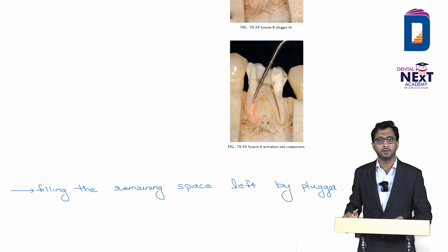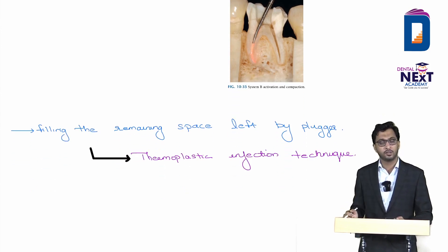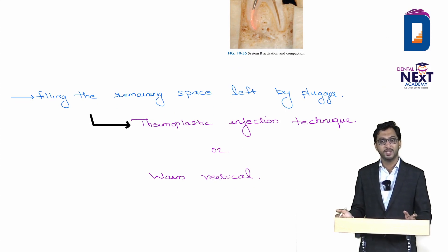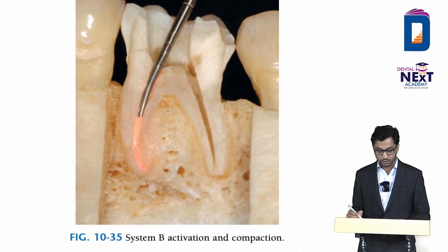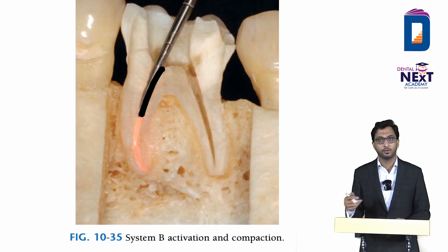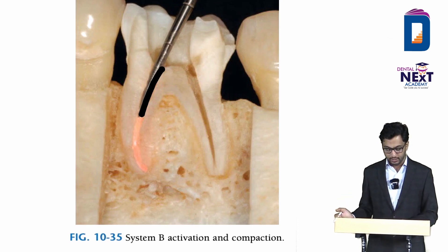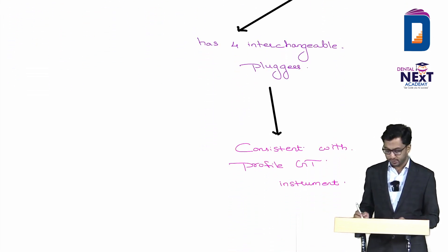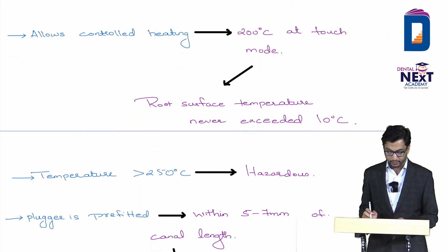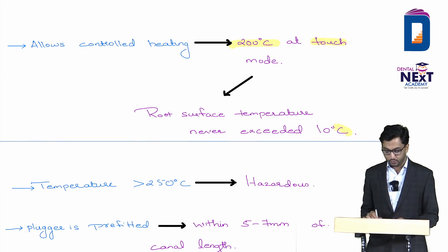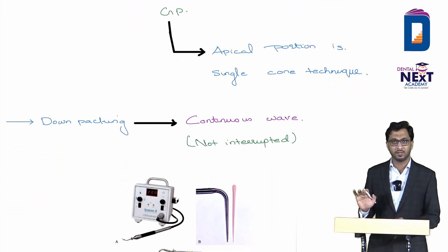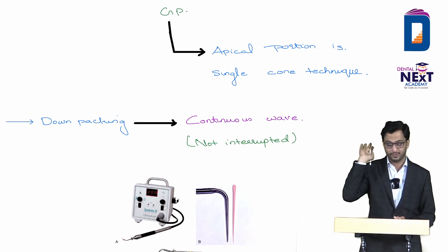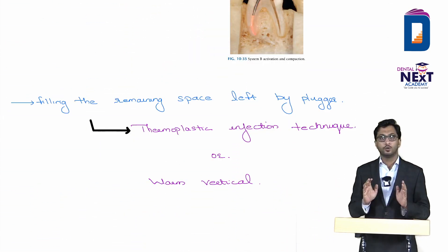In continuous wave compaction, one single cone is placed inside and condensed as a continuous wave to form a solid block. The remaining coronal portion is filled using thermoplastic injection or warm vertical condensation. Key point: System B is consistent with Profile GT instruments, temperature set at 200 degrees Celsius in Touch mode, plugger placed five to seven mm from apex, and down-packing is continuous.